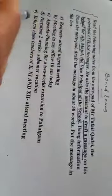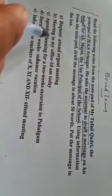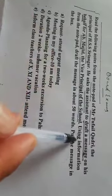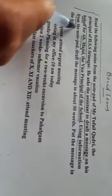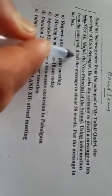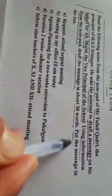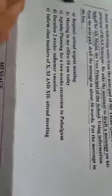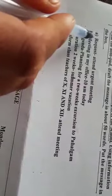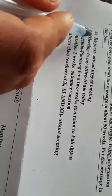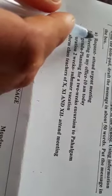And that assistant has to draft a message on behalf of the principal. He has to use the information that is given on the notepad and that message has to be drafted in about 50 words. The message has to be put in the box. Now, what has the principal mentioned? The principal has to give a request to the vice principal.